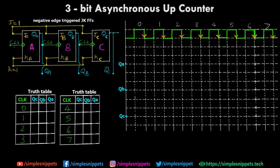We have the first clock CLK; the second clock is provided by the output QA, and the third clock going to the C flip-flop comes from the output of the B flip-flop. Since this is an up counter, it is going to count up — starting from 0 and going to 7, that is from the smaller value to the larger value.